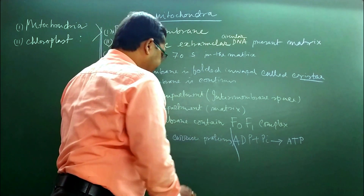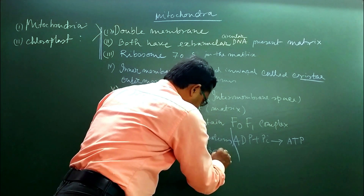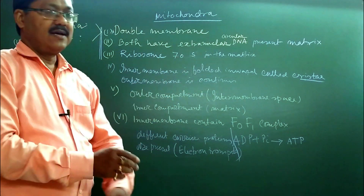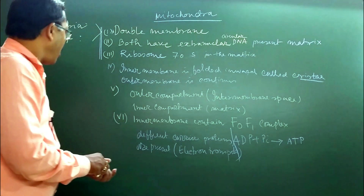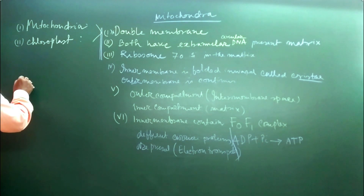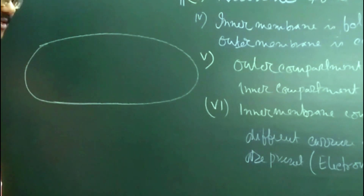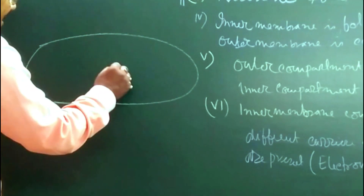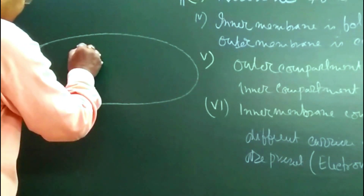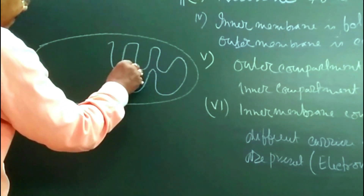These are the common characteristics of mitochondria. Mitochondria is a sausage-shaped or cylindrical structure. It has a continuous outer membrane and the inner membrane is highly folded, forming cristae. When we draw a cross section, we can see the inner compartment and outer compartment clearly.